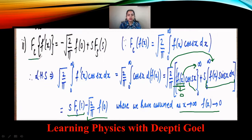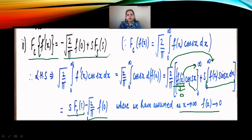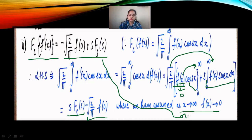We get the result that the Fourier Cosine Transform of f'(x) is minus root 2 by pi times f(0) plus s times the Fourier Sine Transform of the function. We must always remember the condition that f(x) tends to 0 as x tends to infinity. If f(x) tends to 0, then all the derivatives — f'(x), f''(x) — will also tend to 0 as x tends to infinity. This assumption must be remembered while applying Fourier Transform properties to derivatives.